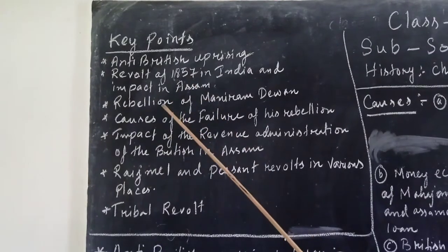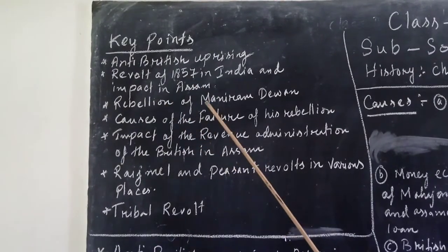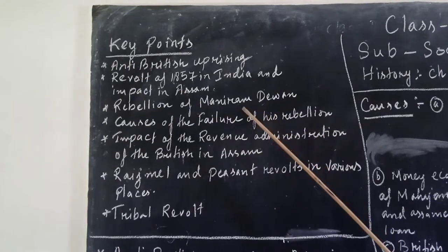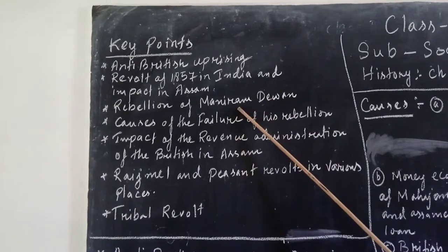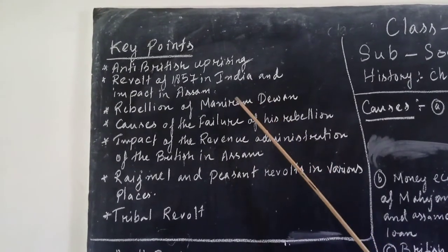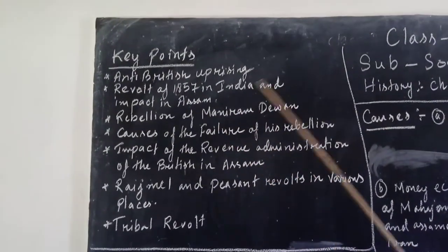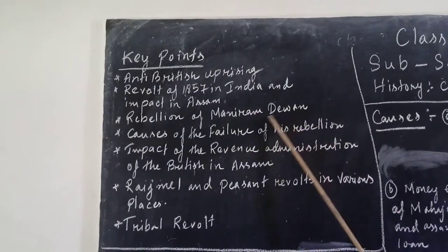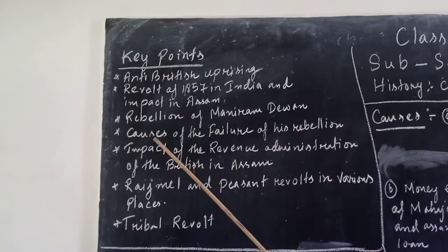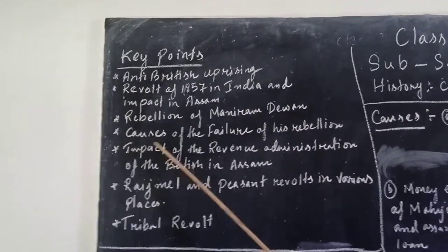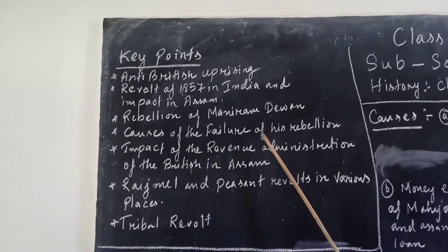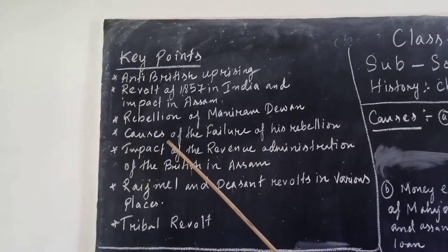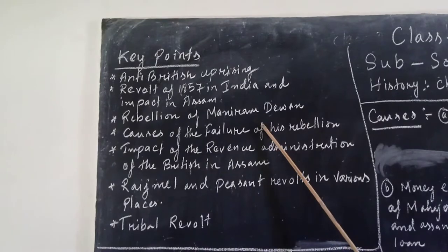The next key point is the Rebellion of Maniram Dewan — rebellion against the British in Assam. Next we will study about the process of the failure of this rebellion and what were the reasons for that failure.